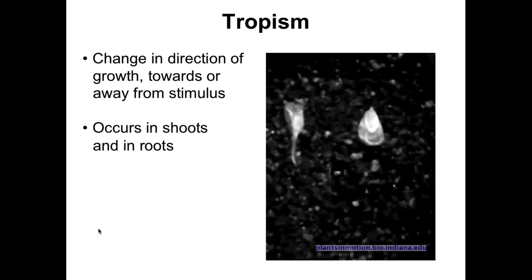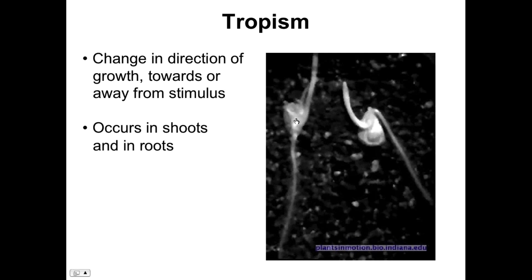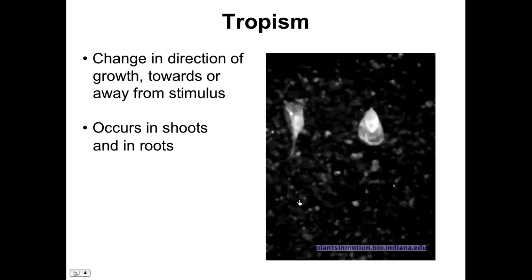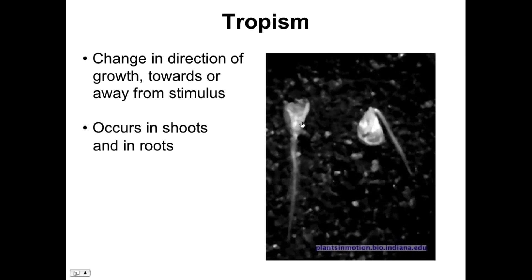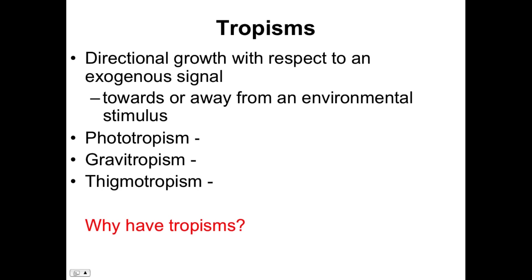In addition to sensing light, plants can sense gravity and other directional stimuli, and will change the direction of their growth towards or away from that stimulus. In germinating maize seeds, regardless of orientation, the root always emerges and grows down towards the gravity vector, and the shoot always grows away from it. A tropism is just directional growth with respect to some exogenous signal, either towards or away from that stimulus.